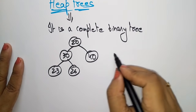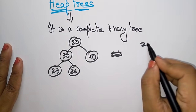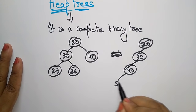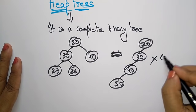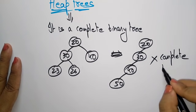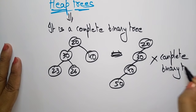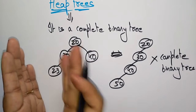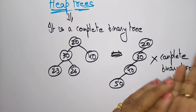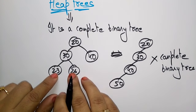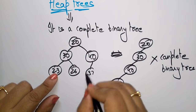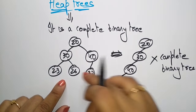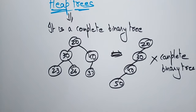If you take 20, 30, 40, 50 — this is not a complete binary tree. This is the difference between a complete binary tree and a non-complete binary tree. You have to check the levels whether it is following the same levels or not.